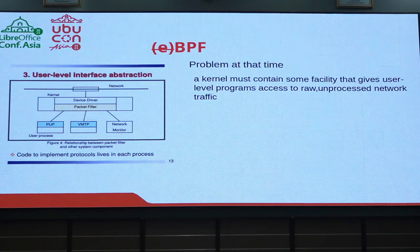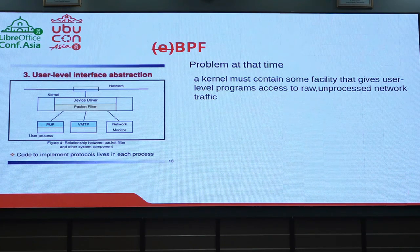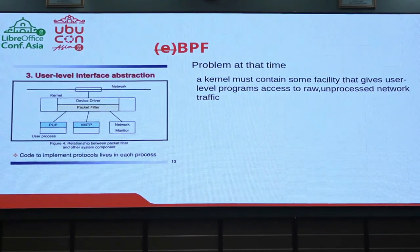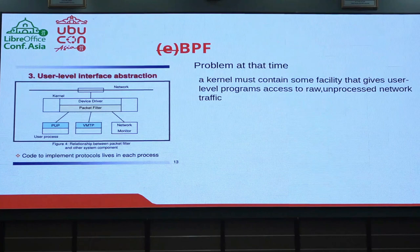The packet filter design at that time was: network packets were delivered to the kernel space, then sent directly to user space. As you can see, there was no filtering at the kernel level. So the filtering process happened in user space, not in kernel space. This required forwarding every packet from kernel level to user space for filtering — which was not the optimal approach. We were copying packets from kernel to user space, then filtering them there.